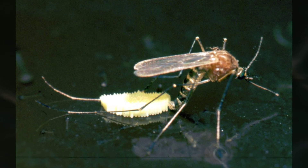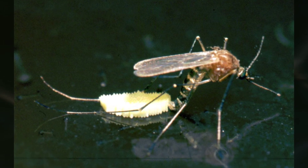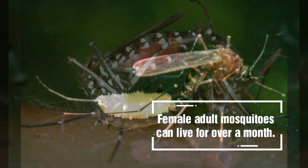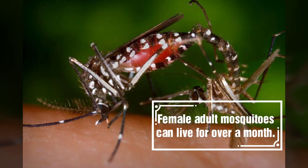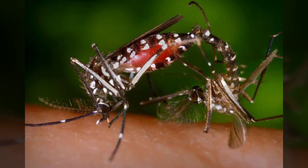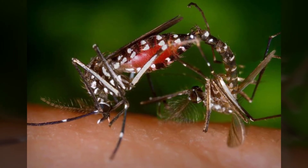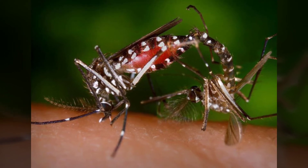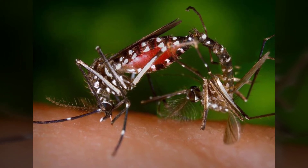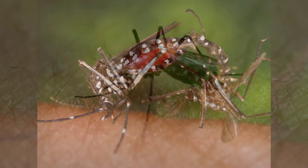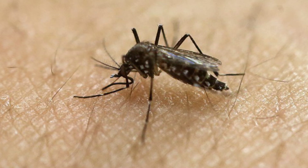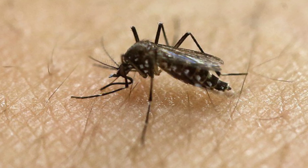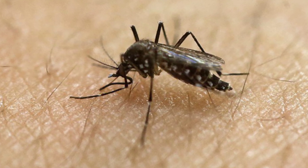Female adult mosquitoes can live for over a month. They also feed on plant nectar, but they require a blood meal in order to reproduce. Most mosquitoes survive the winter as eggs or larvae before the mosquito reproduction life cycle begins again.